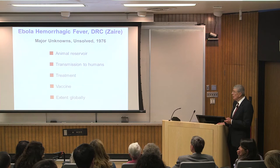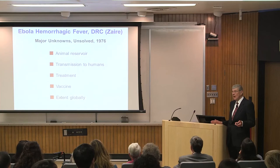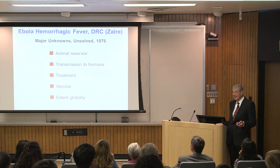So what were the major unknowns? The animal reservoir, how humans became infected, treatments, vaccines, and the global extent. Sound familiar? Same thing today.